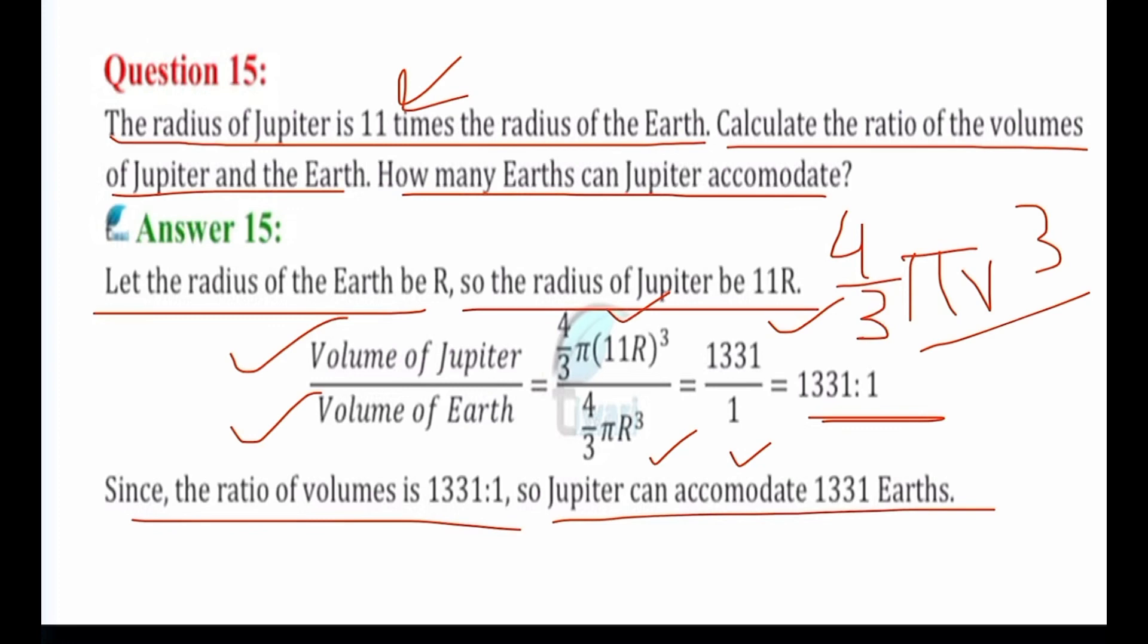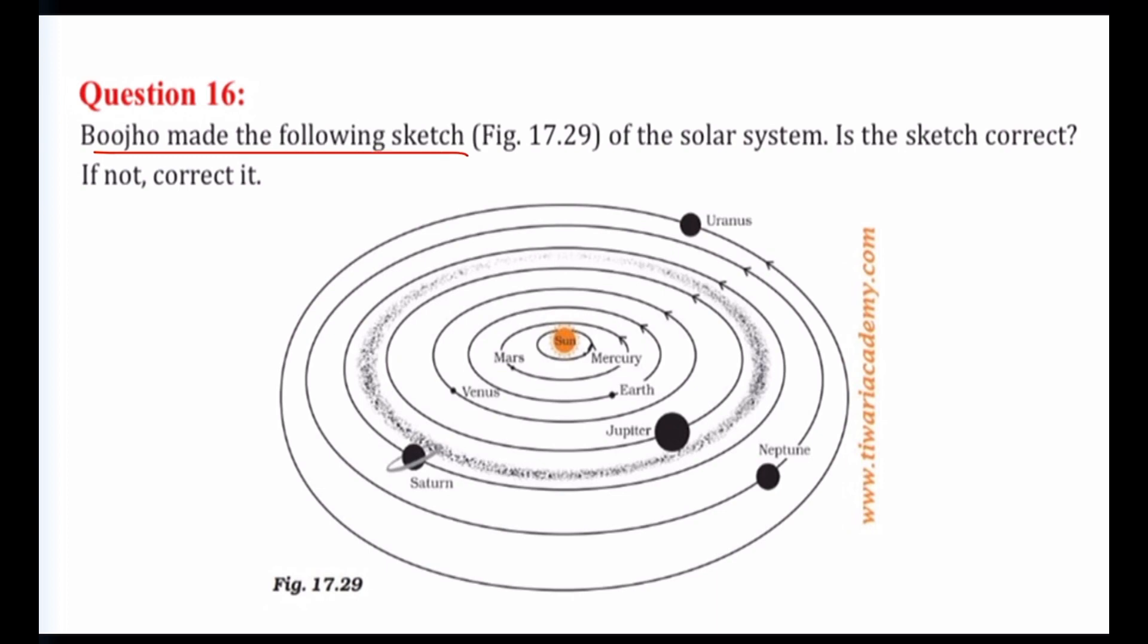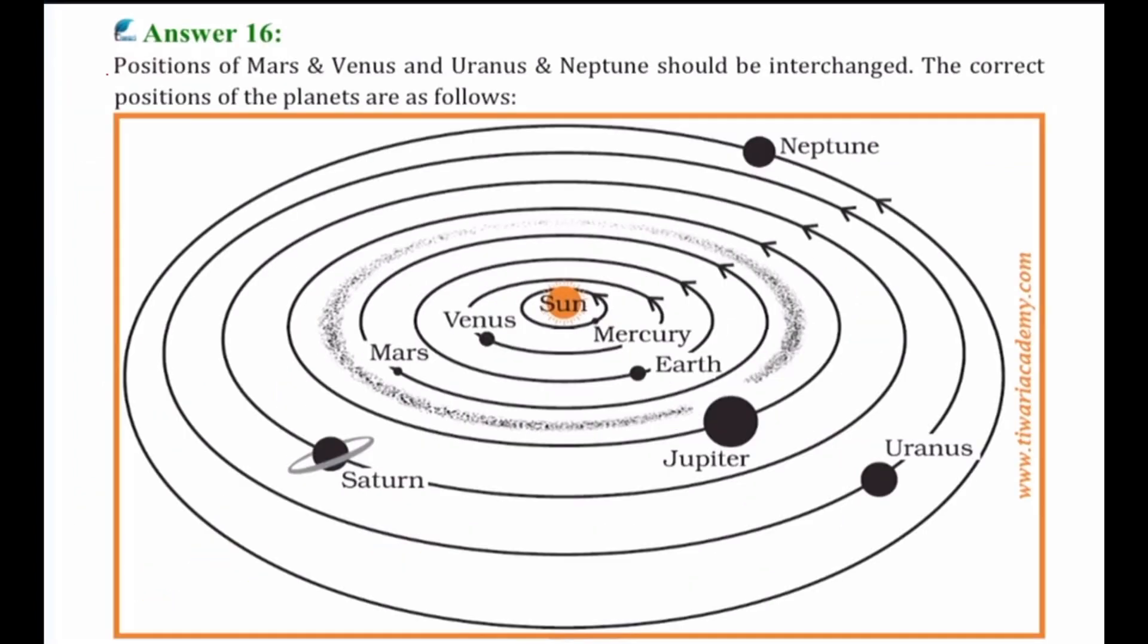Next is question number 16. Bujo made the following sketch of the solar system. Is the sketch correct? If not, correct it. It requires proper position knowledge. The sketch is incorrect. The position of Mars and Venus should be interchanged, and similarly the position of Neptune and Uranus should also be interchanged. So here you can see the correct diagram.